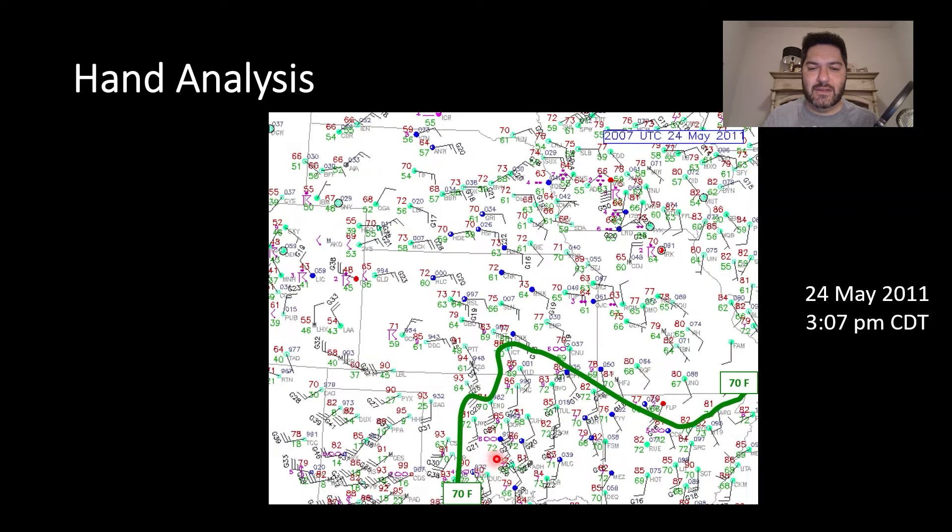To the left of that, you have dew points that are less than 70. So you draw the line right in between. And the reason you do this is it actually helps to visualize or illuminate what's actually going on with the weather there.